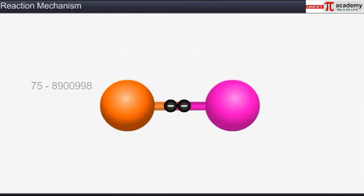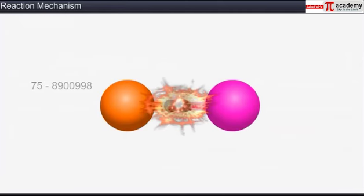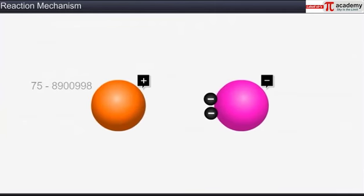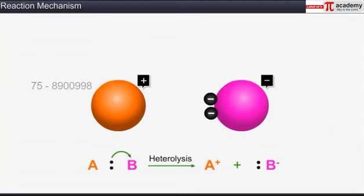The organic reactions preceded by homolytic fission producing free radicals are called free radical or homopolar or non-polar reactions. Heterolytic cleavage is just the opposite of homolytic cleavage. In heterolytic cleavage, a bond is broken unequally and the shared electron pair goes to the more electronegative atom.